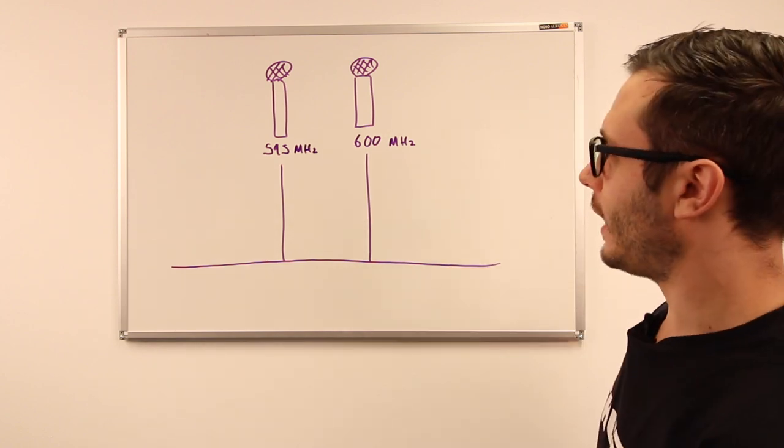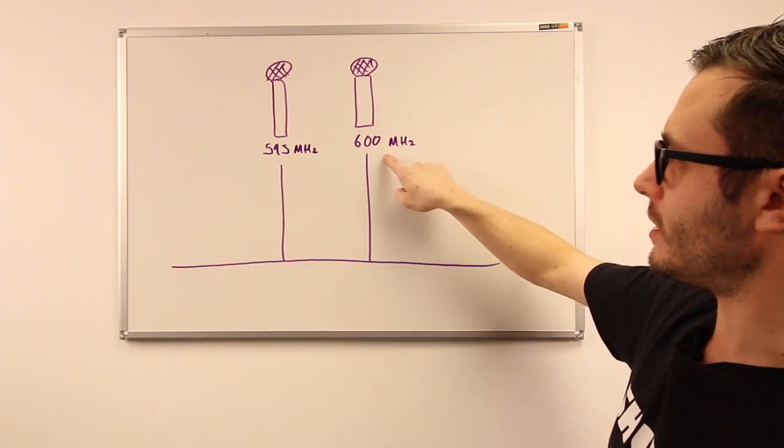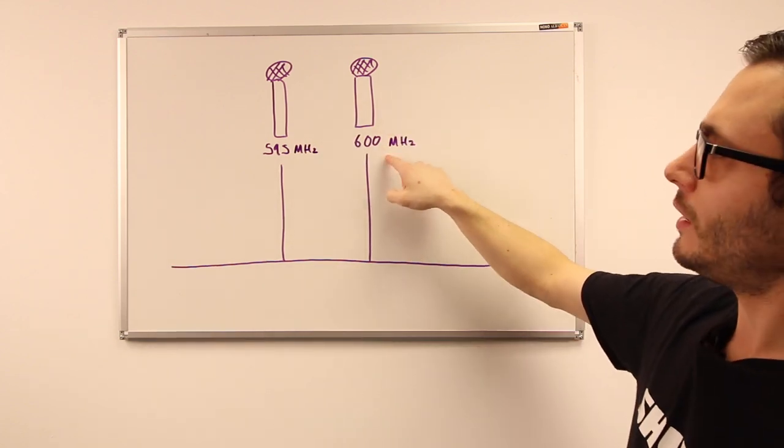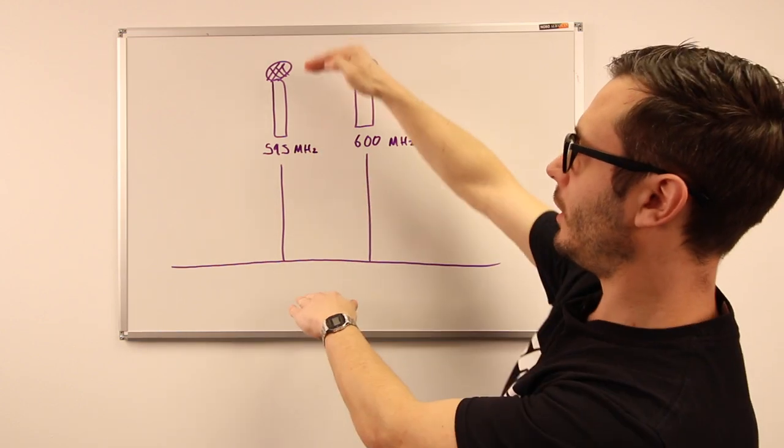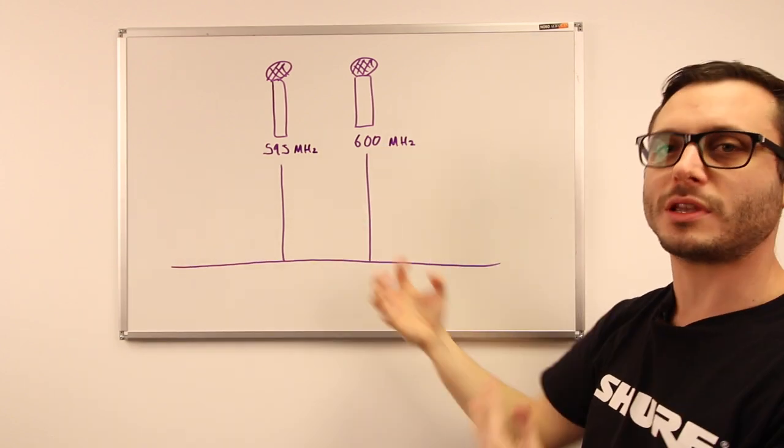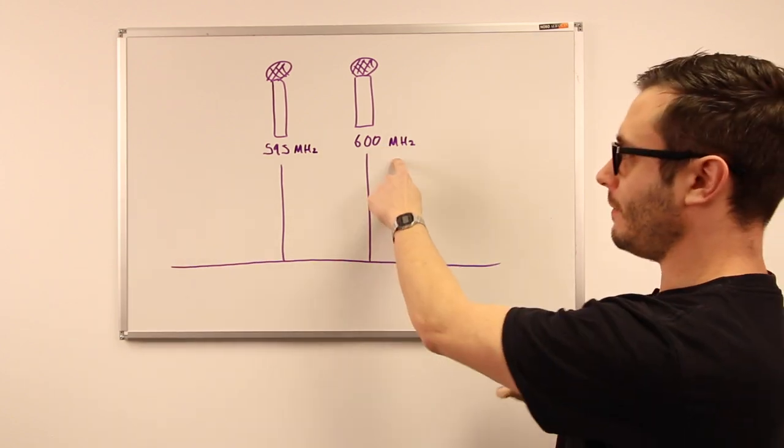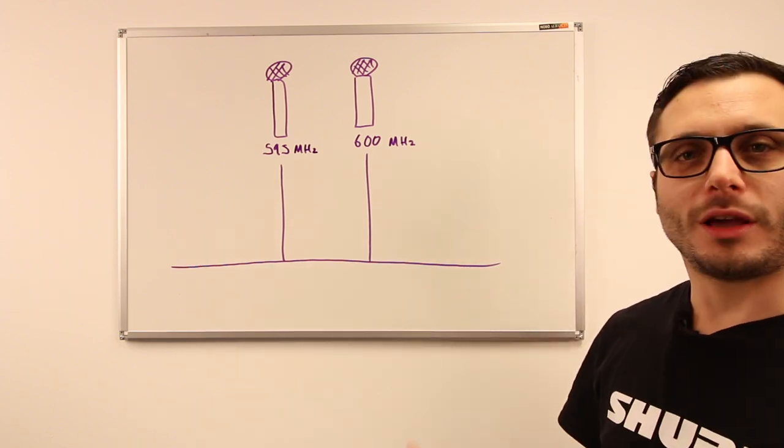We've got two radio mics on air here: a radio mic at 595 megahertz and another radio mic at 600 megahertz. So each of these will produce a fundamental frequency, a double, a triple, etc. of all those frequencies, and those doubles and triples will also interact with the other fundamentals, doubles and triples from the other radio microphone. Let's have a look at what's happening here.